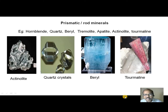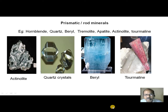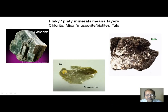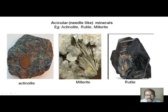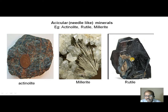Prismatic minerals are shown very clearly: actinolite, quartz crystals, beryl, tourmaline, tremolite, apatite, etc. Flaky minerals include sericite, chlorite, muscovite, biotite — even talc also belongs to flaky minerals. Acicular minerals are those characterized by a needle-like structure — actinolite. We can see clearly the needles and how they are projected. It is very clearly seen in millerite mineral how the needles are projected. And this is rutile. So all these are called as acicular minerals or needle-like minerals.